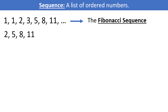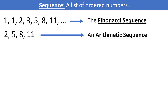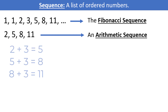This is also what is called an arithmetic sequence, because to get the next value in the sequence, all you have to do is add a constant — in this case, 3. 2 plus 3 is equal to 5, 5 plus 3 is equal to 8, and 8 plus 3 is equal to 11.